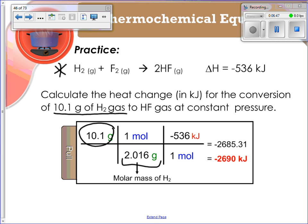So 10.1 grams, 2.016 grams, that's the molar mass of H2, in every one mole. And then, one mole of H2, we have negative 536 kilojoules. Okay?